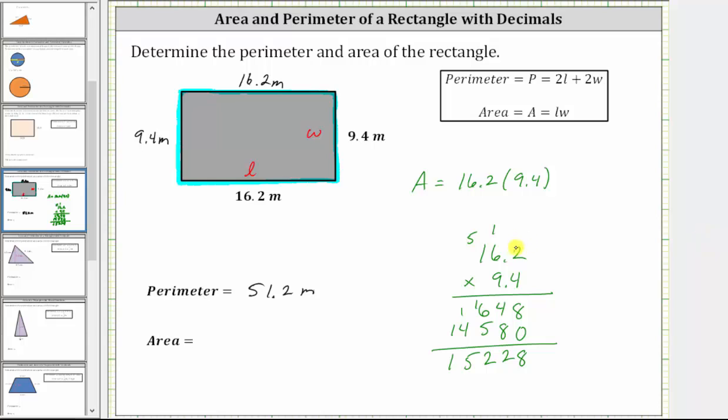But again, the product must contain two decimal places. And therefore the product is 152.28. And therefore the area is 152.28.